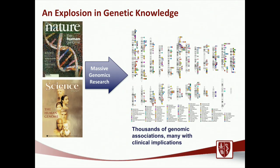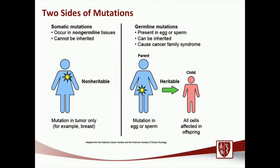Before we dive into the kidney cancer component, I want to spend a few minutes on the two types of mutations we frequently encounter. There are somatic mutations and germline mutations. Somatic mutations are non-heritable — mutations we develop over time, wear and tear mutations that randomly occur in our cells. They cannot be passed down, and these are the majority of mutations that our cancers develop. Germline mutations are very different — much rarer, present in all of our cells, heritable, and in certain instances can predispose individuals to various cancers, kidney cancer being one of them.